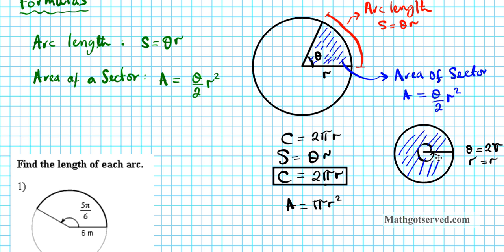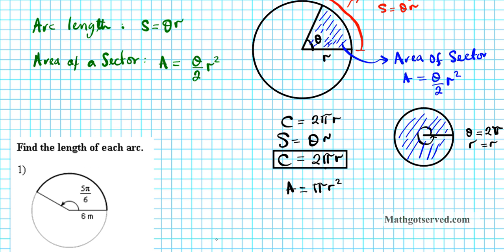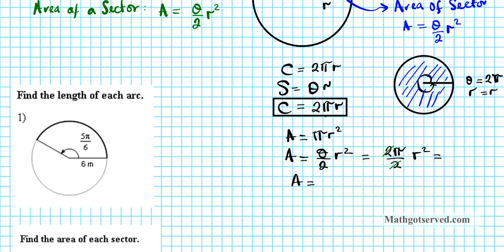If I plug in my arguments into this formula, the formula tells us that A equals theta over 2, r squared. In this case, we have theta being a full circle, which is 2 pi, divided by 2 times r squared. If we simplify this, these two twos divide out and we end up with A equals pi r squared.